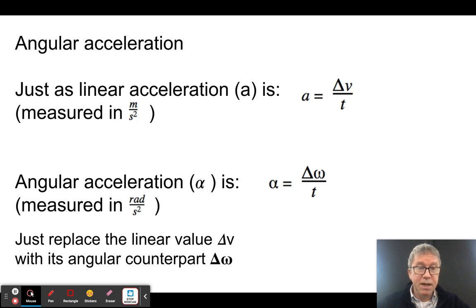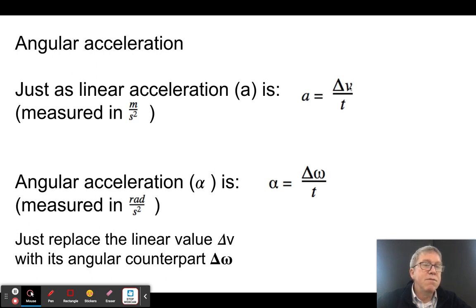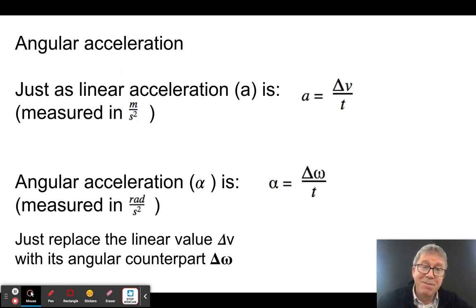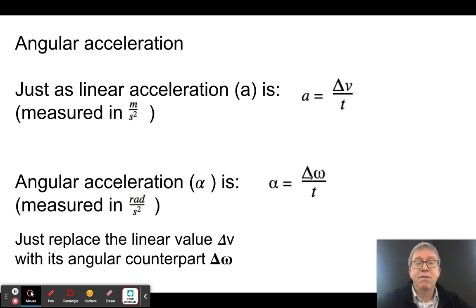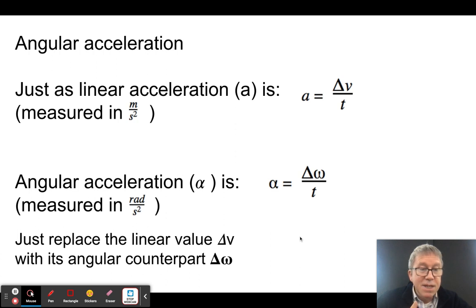We have displacement and velocity — now let's talk about acceleration. Just as translational acceleration a is measured in meters per second squared, and acceleration equals final velocity minus initial velocity divided by time, angular acceleration — which we use the symbol alpha for — equals the final angular velocity minus the initial angular velocity divided by the time. So just like a equals delta v over t, alpha equals delta omega over t. It's just the same thing.